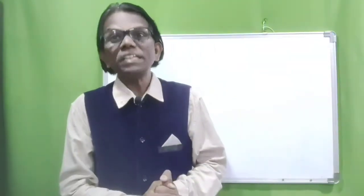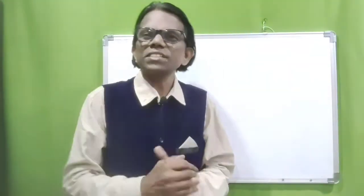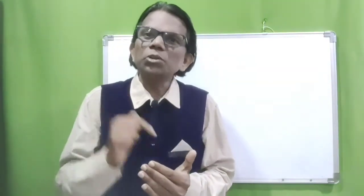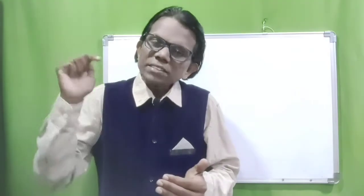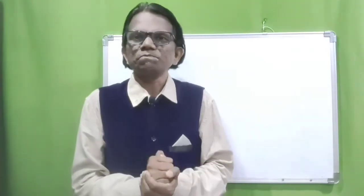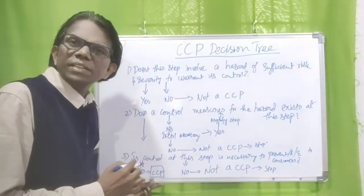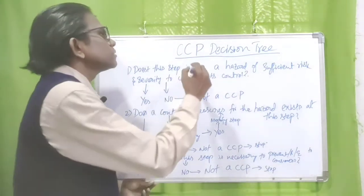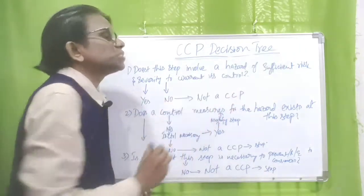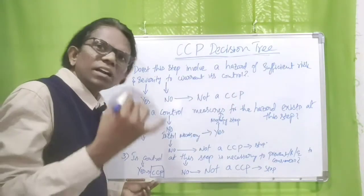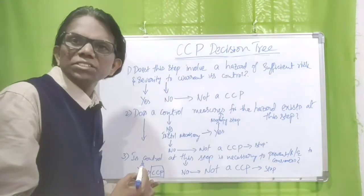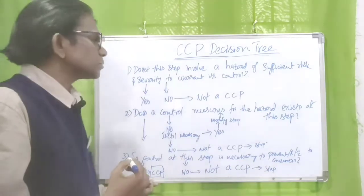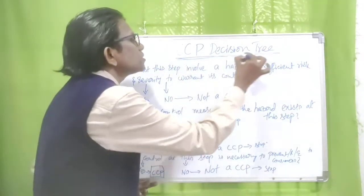Hi, this is Manmat. Welcome back to my channel. Now we are going to discuss the determination of critical control points as principle number two. There are many tools to determine whether a significant hazard is a critical control point or not — one of the tools is the CCP decision tree, and another is the risk assessment matrix.